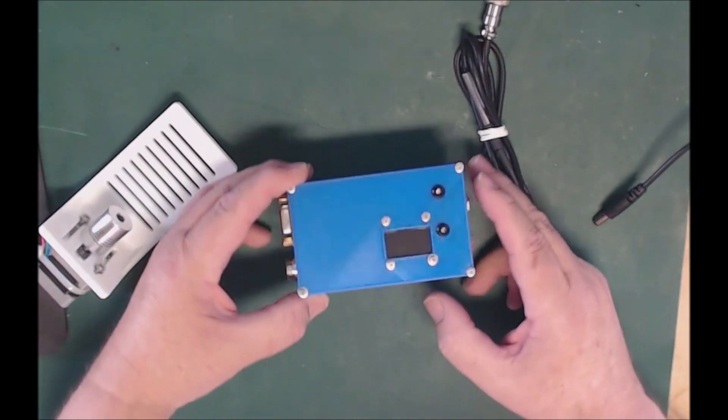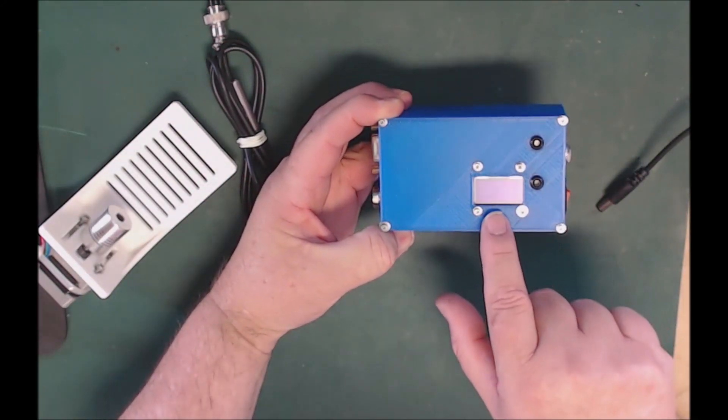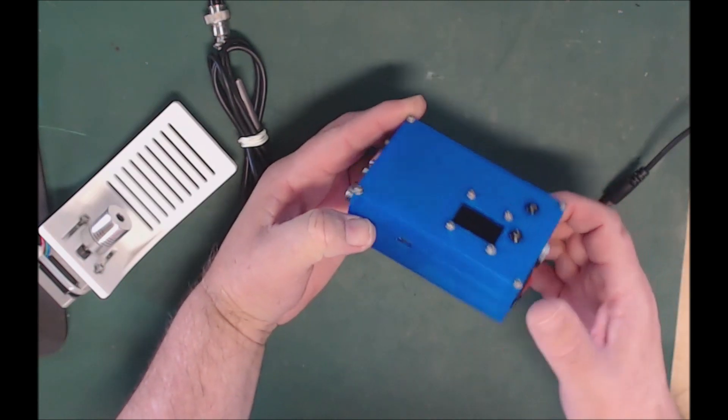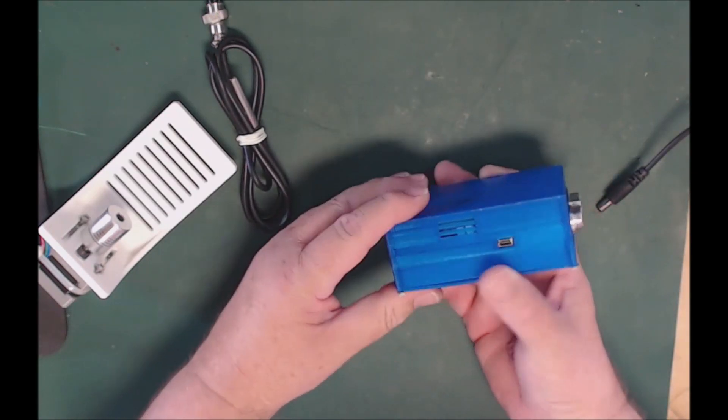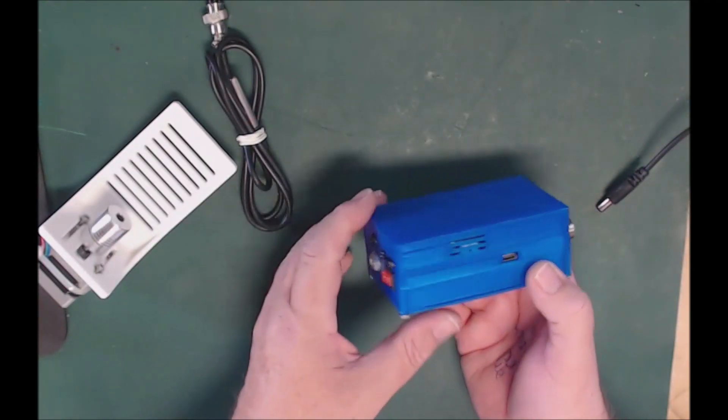Right, so this is the actual focuser controller itself. You can see this option, it's got an OLED display, in and out LEDs of course. On the side here, we've got some air vents, but we also have a USB connection.